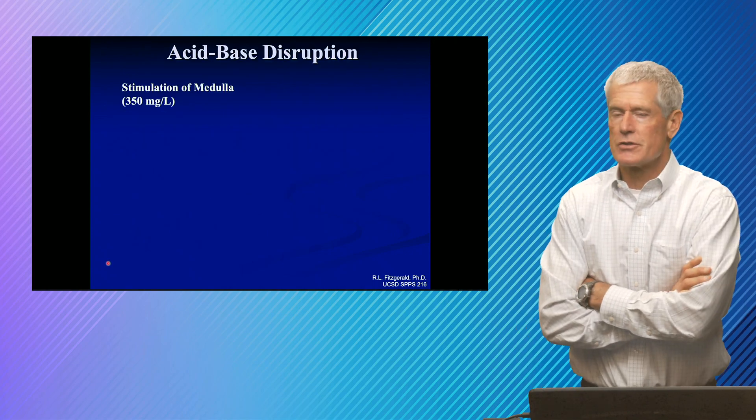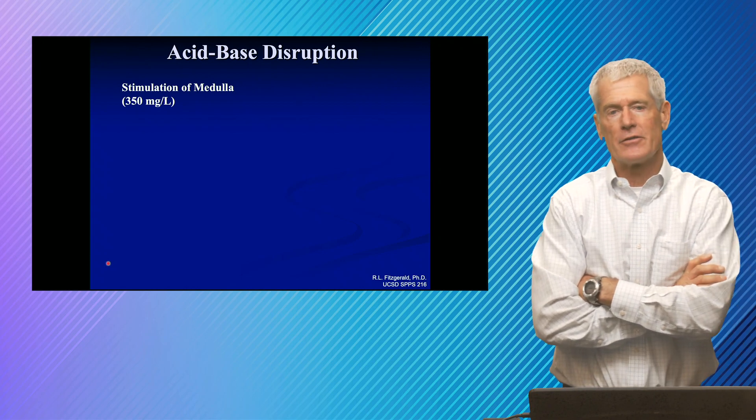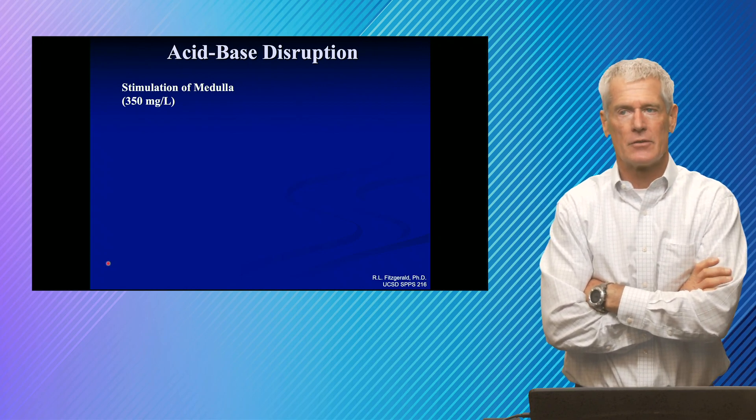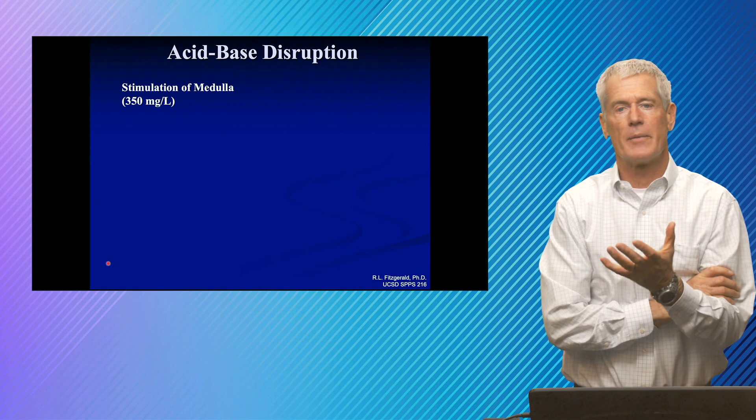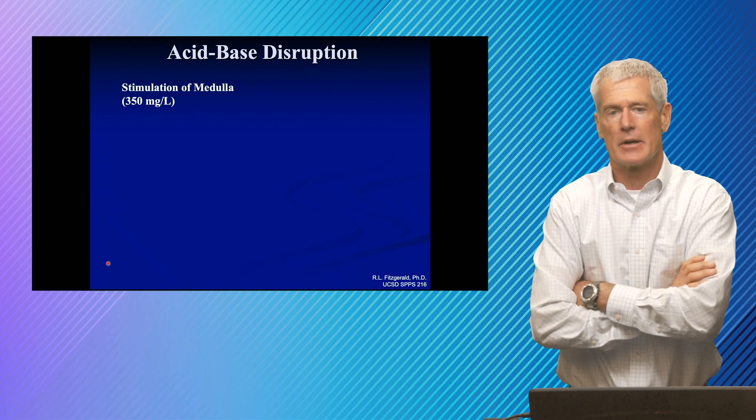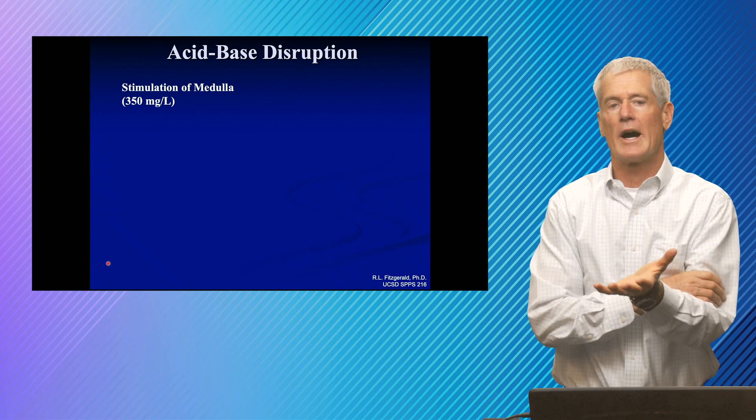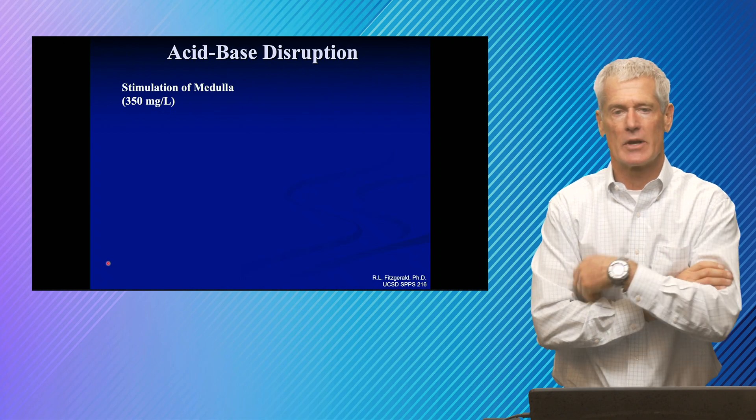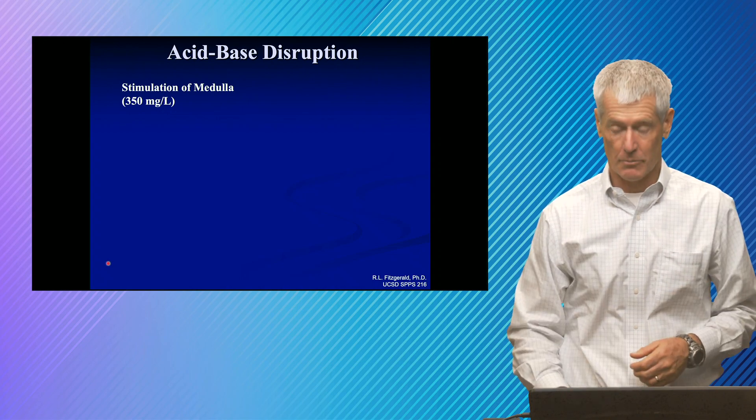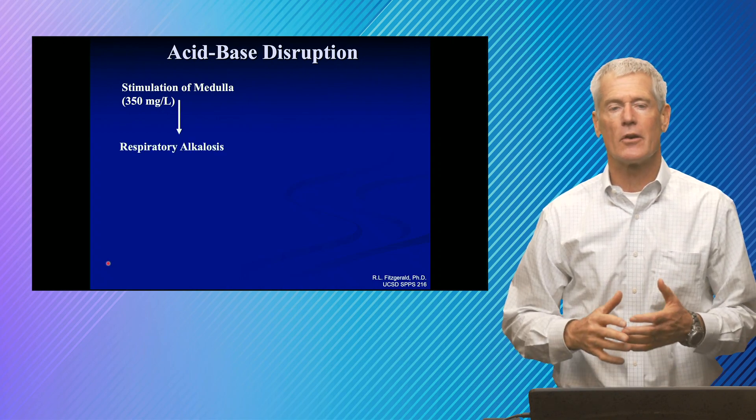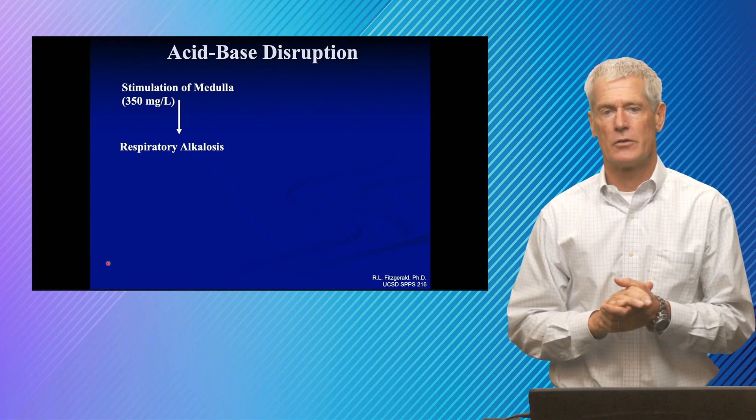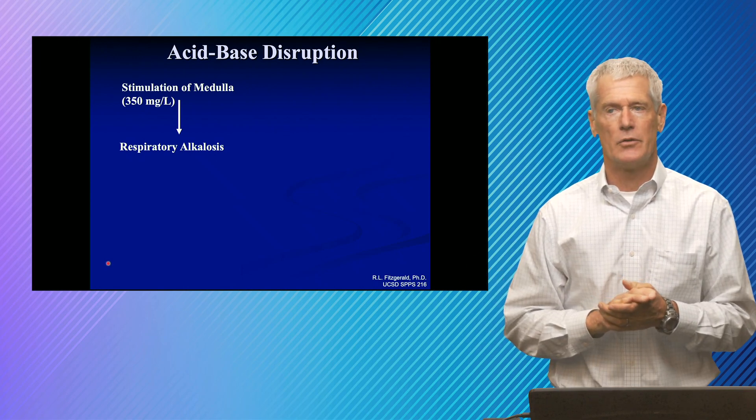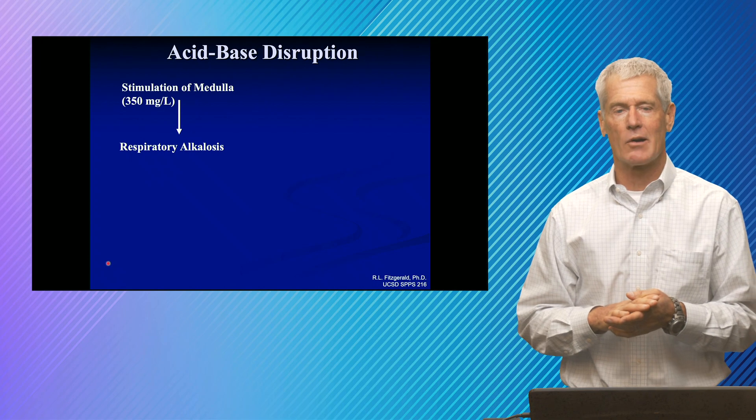So just a quick review of acid base disruptions in salicylates. Initially, if patients take an overdose of aspirin and their concentrations are rising, it actually stimulates the respiratory center. So patients start to breathe hard. And if you breathe hard, you blow off your CO2. And if you blow off your CO2, you develop a respiratory alkalosis.